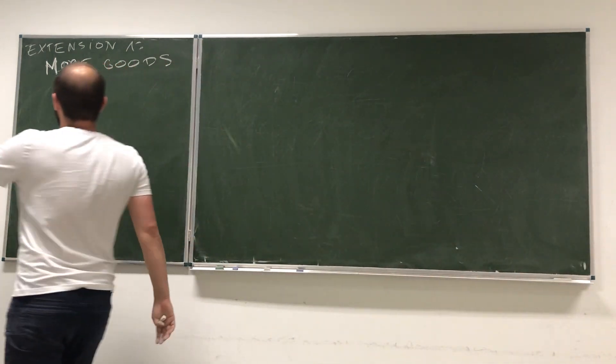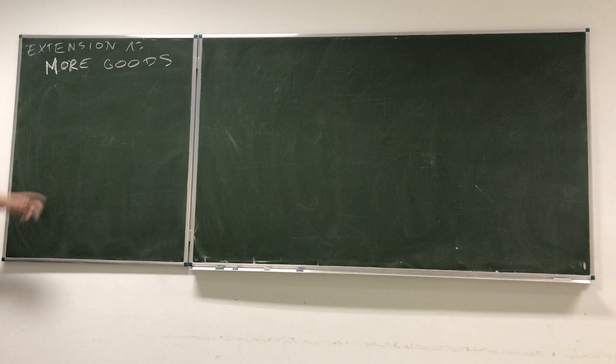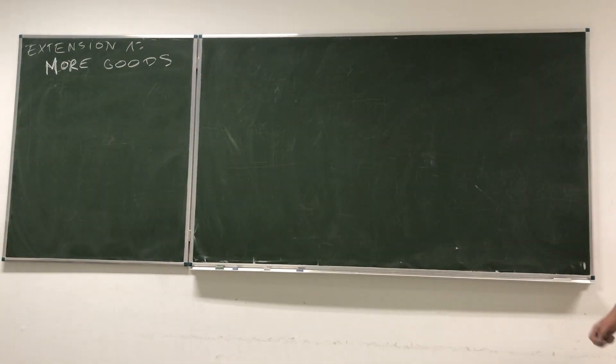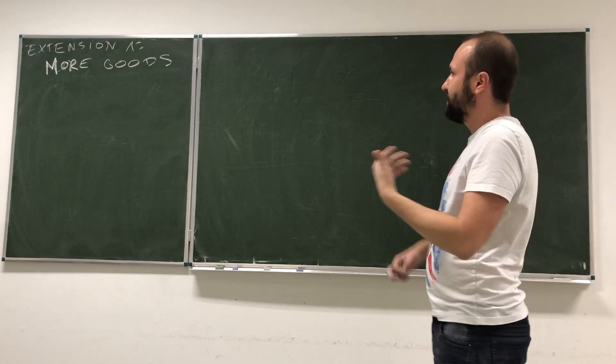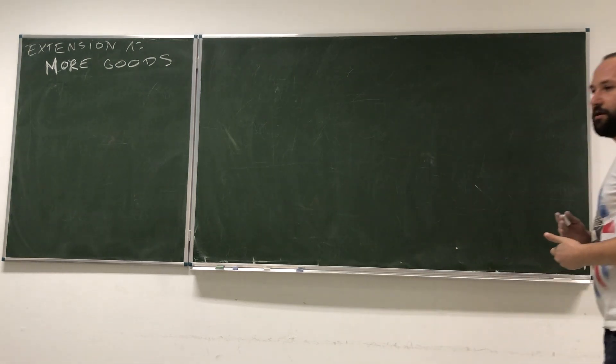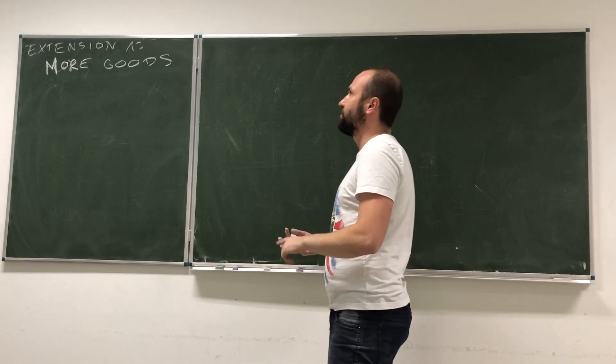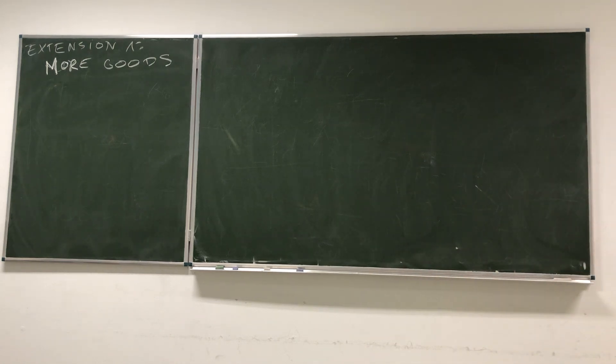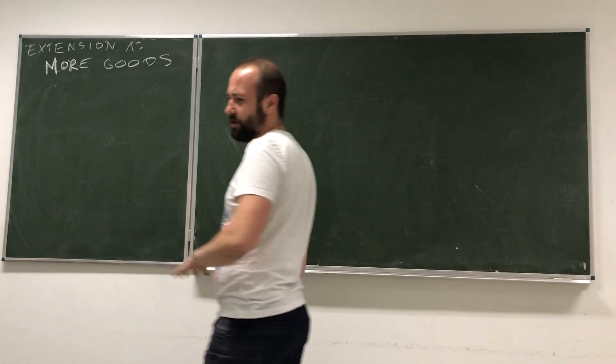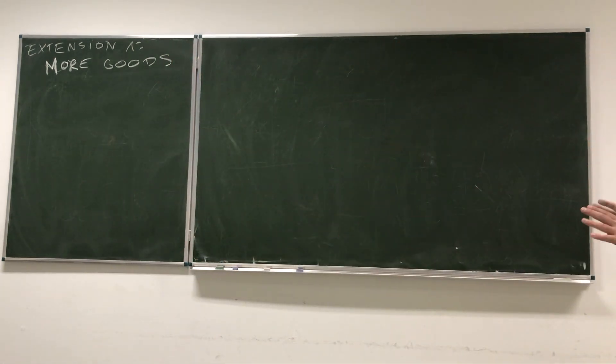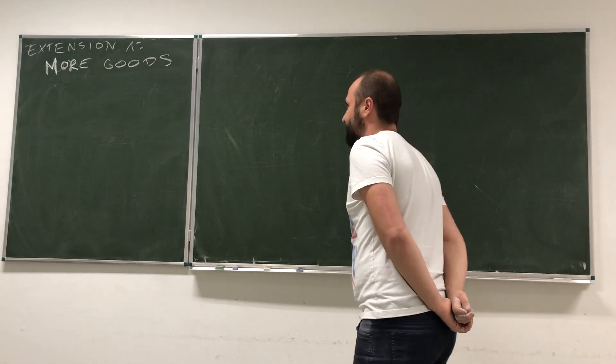The first extension we're going to discuss is what if we would have more goods in this model. If we would have more goods, the comparative advantage model with more goods was actually developed by Dornbusch, Mischner and Samuelson in 1977 in their paper about a model with a continuum of goods. It describes a pretty straightforward prediction of what would happen.